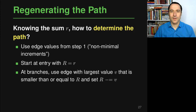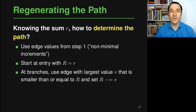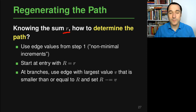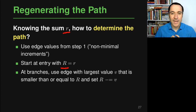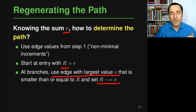Once we have the encoding and the counts array, how do we recover the actual path from a given encoding? If the encoding is lowercase r, we initialize a helper variable uppercase R to r, start at the entry node, and at each branch point take the edge with the largest value that is still less than or equal to uppercase R. We subtract that edge value from uppercase R and continue until we reach the exit. The path taken is exactly the one represented by encoding r.